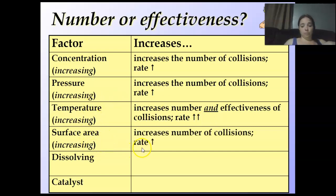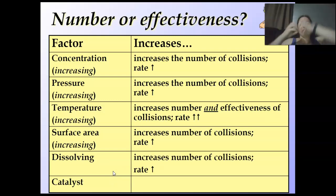How about surface area? Number of collisions. It increases the rate. So the only thing that really is affecting effectiveness is temperature. How about dissolving? That one increases the collisions because you're breaking them into separate parts.